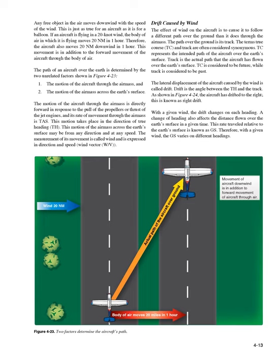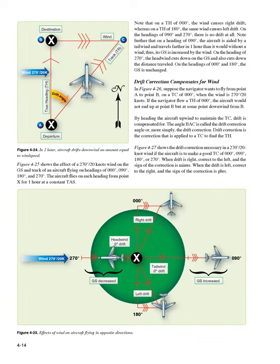With a given wind, the drift changes on each heading. A change of heading also affects the distance flown over the earth's surface in a given time — known as GS. Therefore, with a given wind, GS varies on different headings. Figure 4-25 shows the effect of a 270°/20-knot wind on the GS and track of an aircraft flying on headings of 000°, 090°, 180°, and 270°. The aircraft flies on each heading from point X for one hour at a constant TAS.